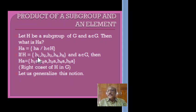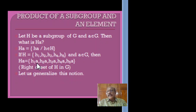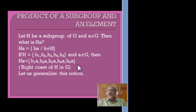For example, if H = {h1, h2, h3, h4, h5} and A belongs to G, then HA = {h1·A, h2·A, h3·A, h4·A, h5·A}, where we multiply each element of H by A on the right hand side. In group theory, this HA is usually known as the right coset of H in G.